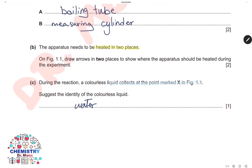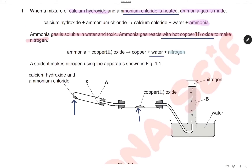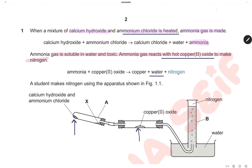During the reaction, a colorless liquid is collected at the point marked X. We need to suggest the identity of this liquid. Point X is where a liquid forms from the reaction of calcium hydroxide and ammonium chloride. From the first equation, we see the liquid is water. So the identity of this liquid is water.